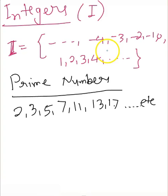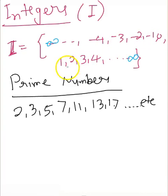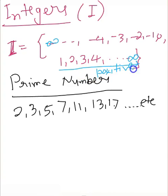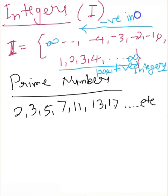Moving to the set of integers: all the integers starting from minus infinity to plus infinity are called integers. Integers include from minus infinity, ..., minus 3, minus 2, minus 1, 0, then positive integers 1, 2, 3, 4, up to infinity. Numbers from 1 to infinity are positive integers, numbers from minus 1 to minus infinity are negative integers, and 0 is neither a positive nor a negative integer — it is just an integer.